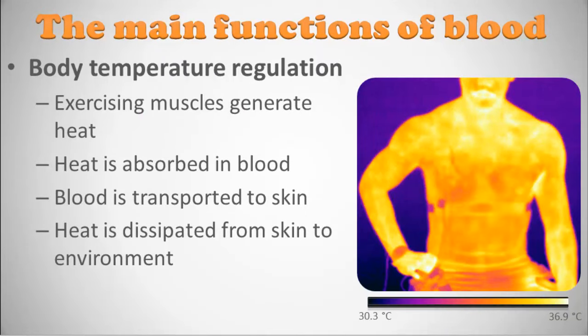The third function — and perhaps the most interesting from an environmental physiology standpoint — is body temperature regulation. When you exercise, your muscles generate heat that is absorbed into the blood and pumped around the body toward the skin, where it dissipates to the environment. A thermographic image from an experiment shows cold areas as dark and hot areas as golden and white, with temperatures ranging from 30 to 37 degrees Celsius.